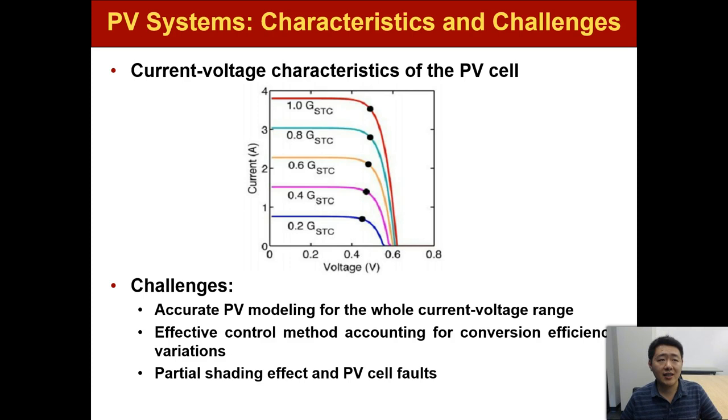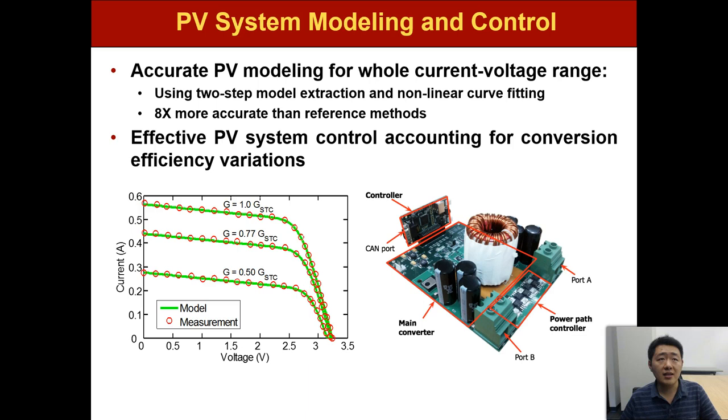For the PV system, there are several challenges in research. The first one is accurate PV modeling of the whole current voltage range. The second one is effective control method accounting for the conversion efficiency variation. And the last one is how to combat partial shading effect and PV cell faults.